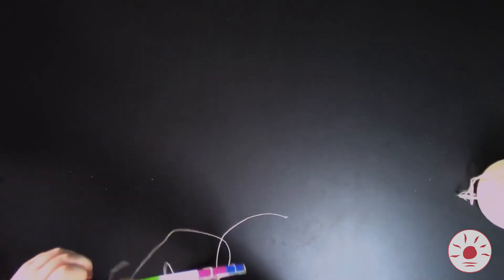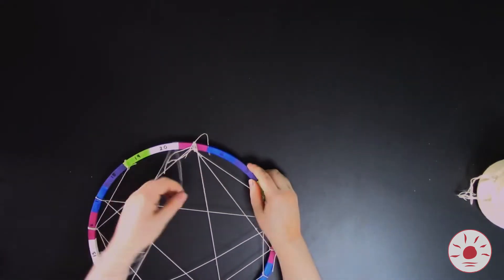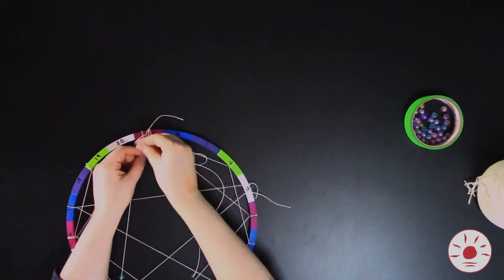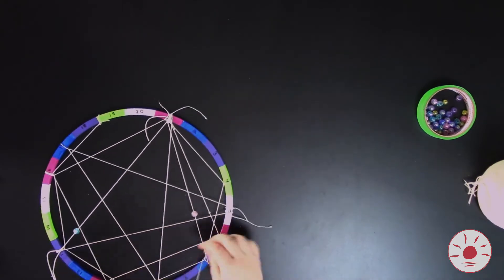Add as much string as you want and tie it off when you're done. I like counting by sections of 8 because it tends to give me this cool star pattern. You can also add a bead or two to your string as you tie it.